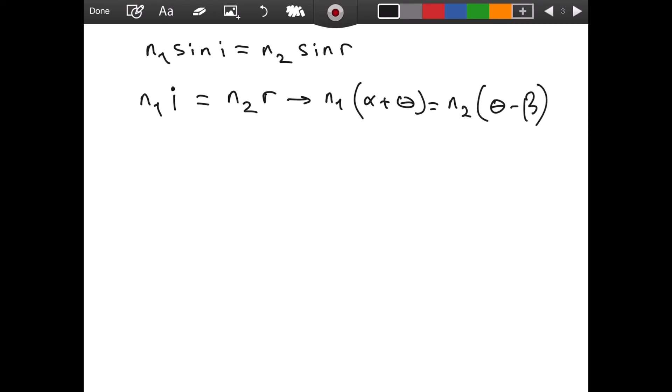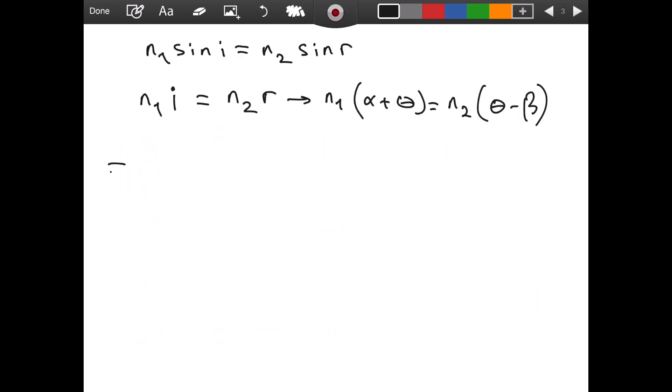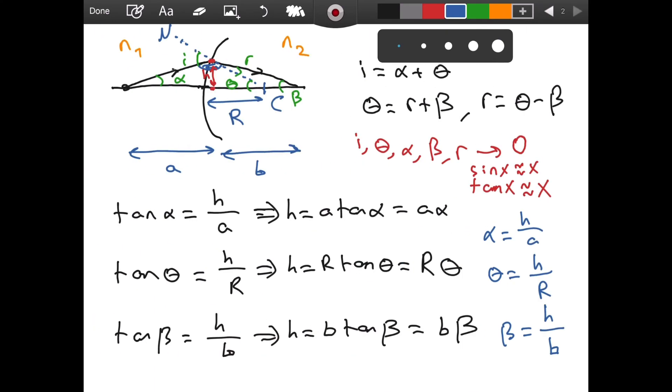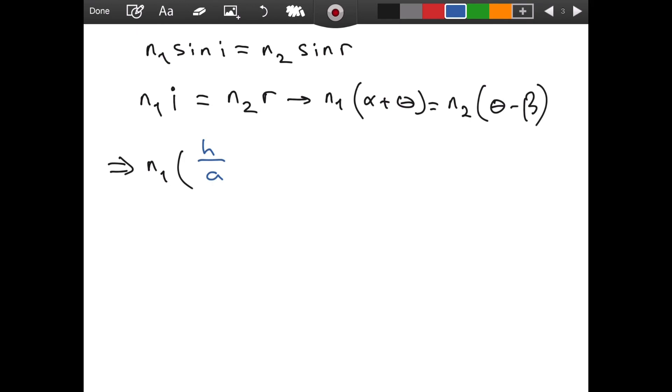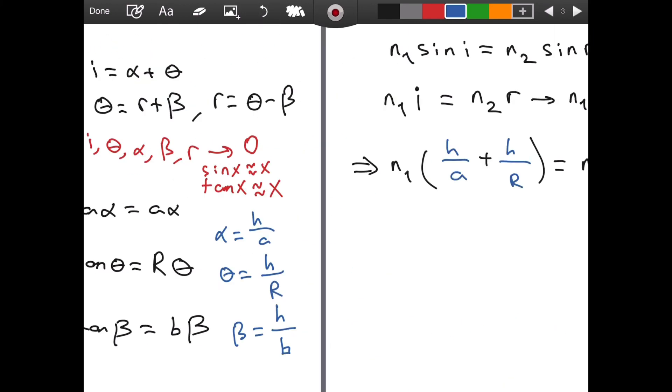And notice, I also have formulas for alpha, theta, and beta. So we can also substitute those in them. And if I do that on the new line, I am going to have n1 times h over a, and then I have a plus sign. For theta, I can write h over R. I close the parentheses. It is equal to n2. For theta, we just add h over R. And then a minus sign. For beta, we are going to have h over b. We close the parentheses as well.